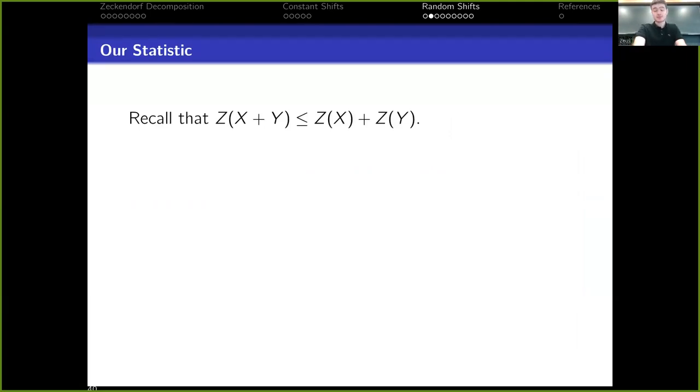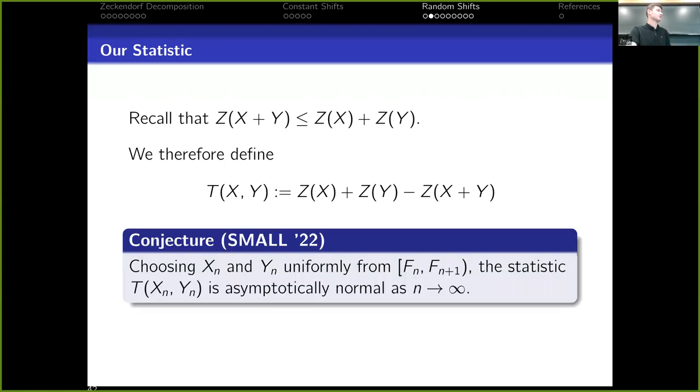So recall that z(x + y) is at most z(x) plus z(y). And the reason this was because you can play the Zeckendorf game by adding the strings of x and y on top of each other. You'll have perhaps adjacent ones or places where two ones stack on top of each other and produce a two. So by simplifying these things, the number of summands can only go down and this results in z(x + y) being at most z(x) plus z(y). This motivates us, however, to define the statistic τ(x, y) to be z(x) plus z(y) minus z(x + y).